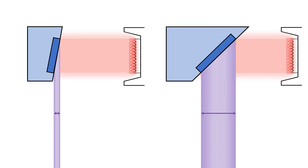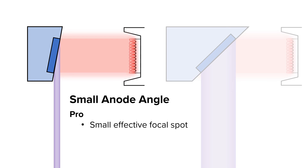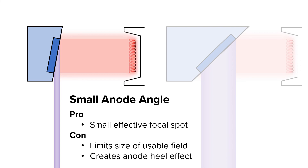There are a number of pros and cons to having a small or large anode angle. The biggest benefit of a small anode angle is it creates a small effective focal spot, thus increasing spatial resolution and recorded detail. A couple cons of a small anode angle are that it limits the size of the usable x-ray field and it creates an anode heel effect.